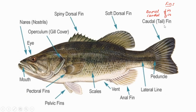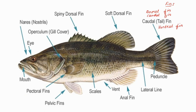Another type of fin is the ventral fin. From the word itself we can understand it is seen ventrally. The fish shown in this picture has the ventral fin absent — it should be seen here but is not present for this fish. Just understand that ventral fins are also present in some fish species.